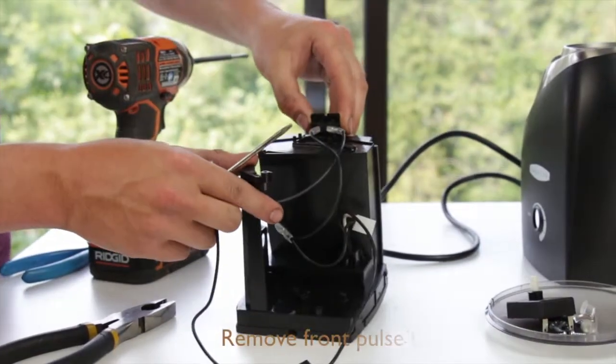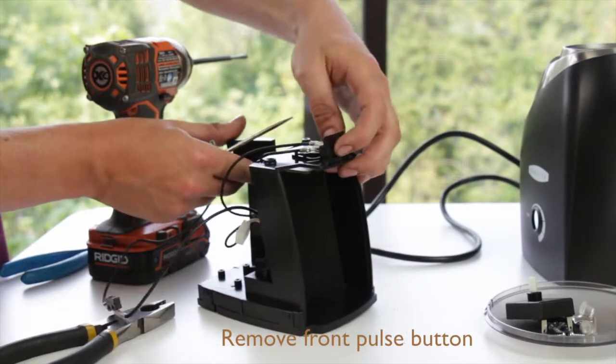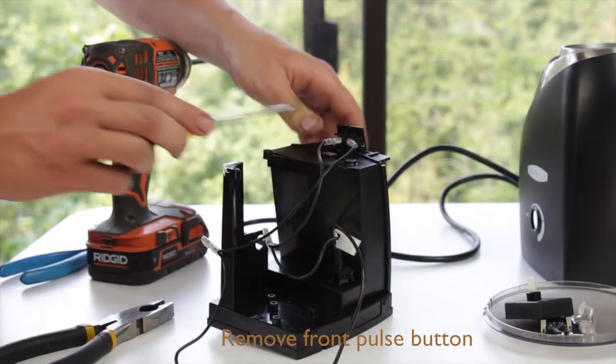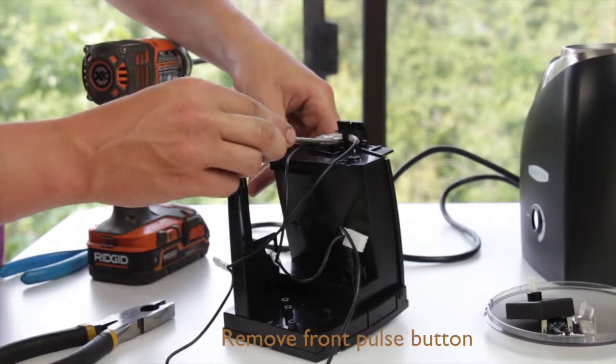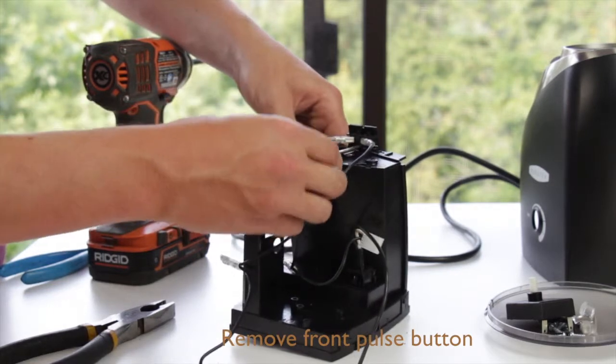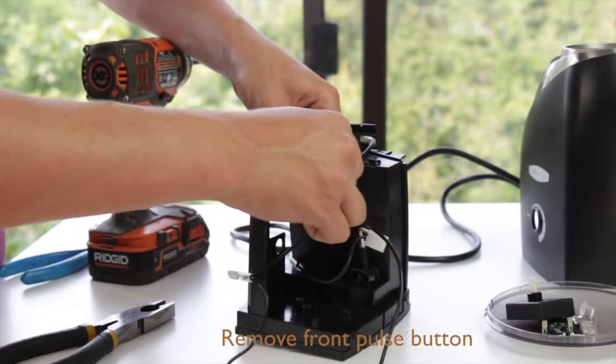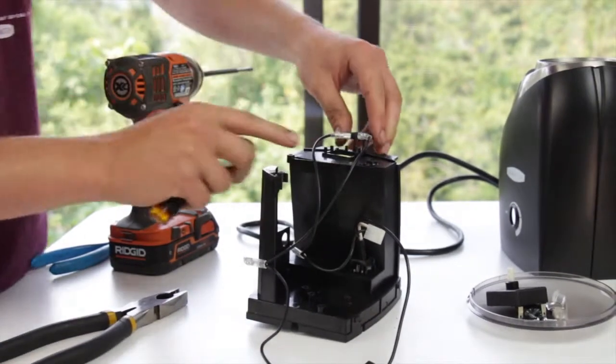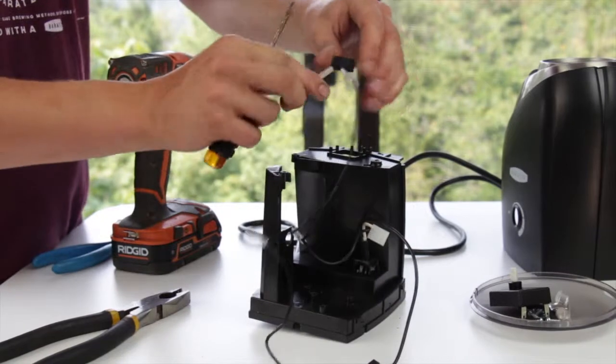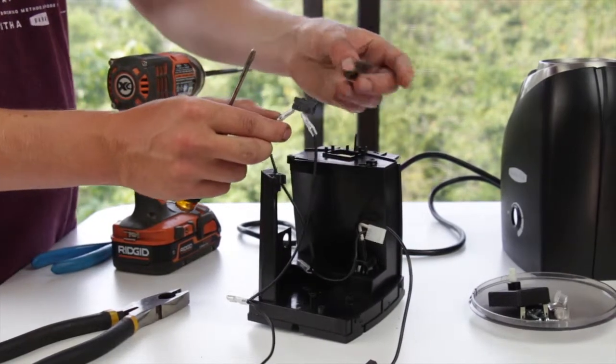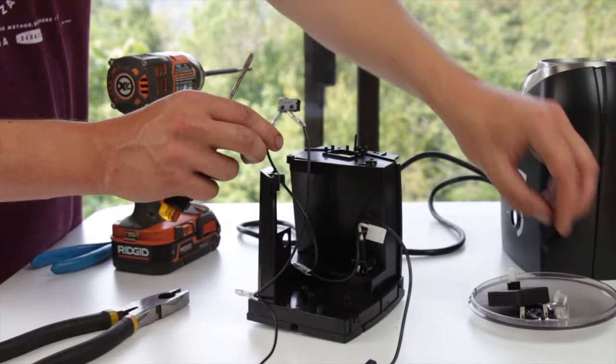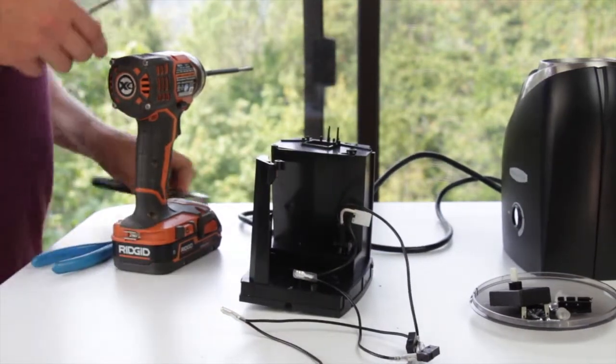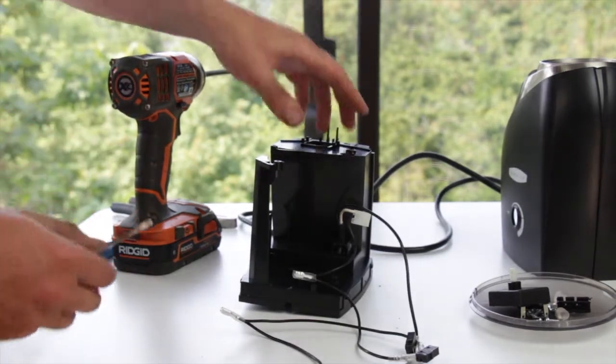Next, we need to remove the front pulse button from the chassis. The pulse button is adhered at our factory, but is easy to remove. Take your flathead screwdriver and place it underneath the pulse button and gently pry upwards. The switch removes readily, as well as the bracket. Put the bracket in your parts bin and leave the switch attached to the wire harness. Now we are almost done removing the old chassis.